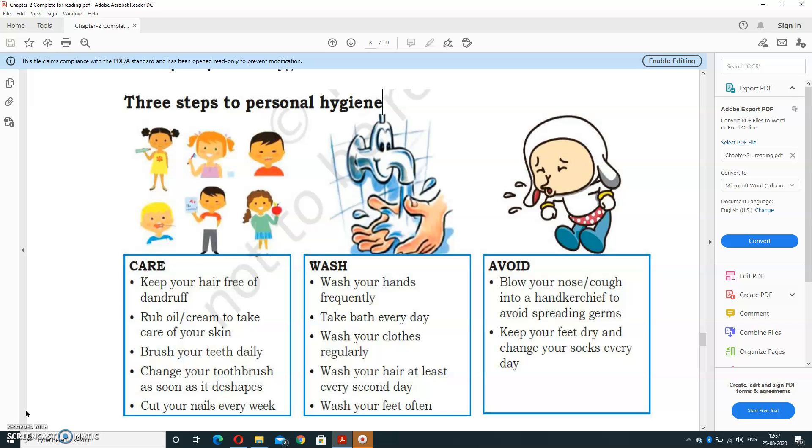Brush your teeth daily. Change your toothbrush as soon as it is damaged. Cut your nails every week. How you'll wash: wash your hands frequently, take a bath every day, wash your clothes regularly, wash your hair at least every second day, and wash your feet often.